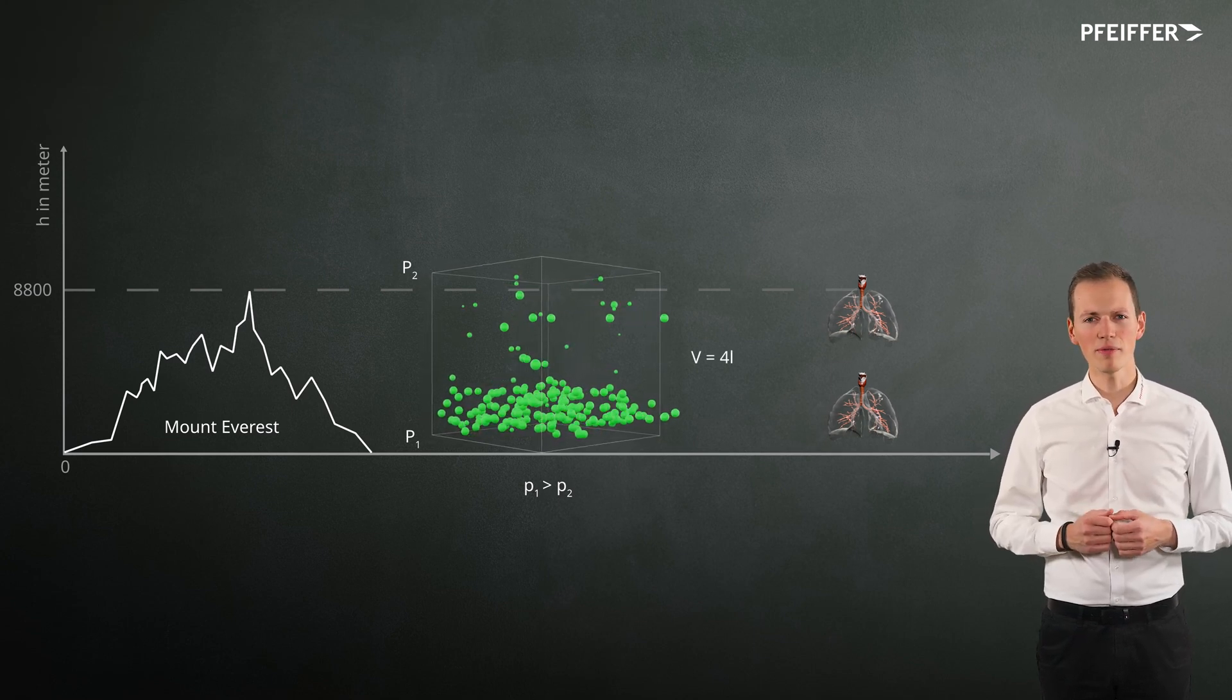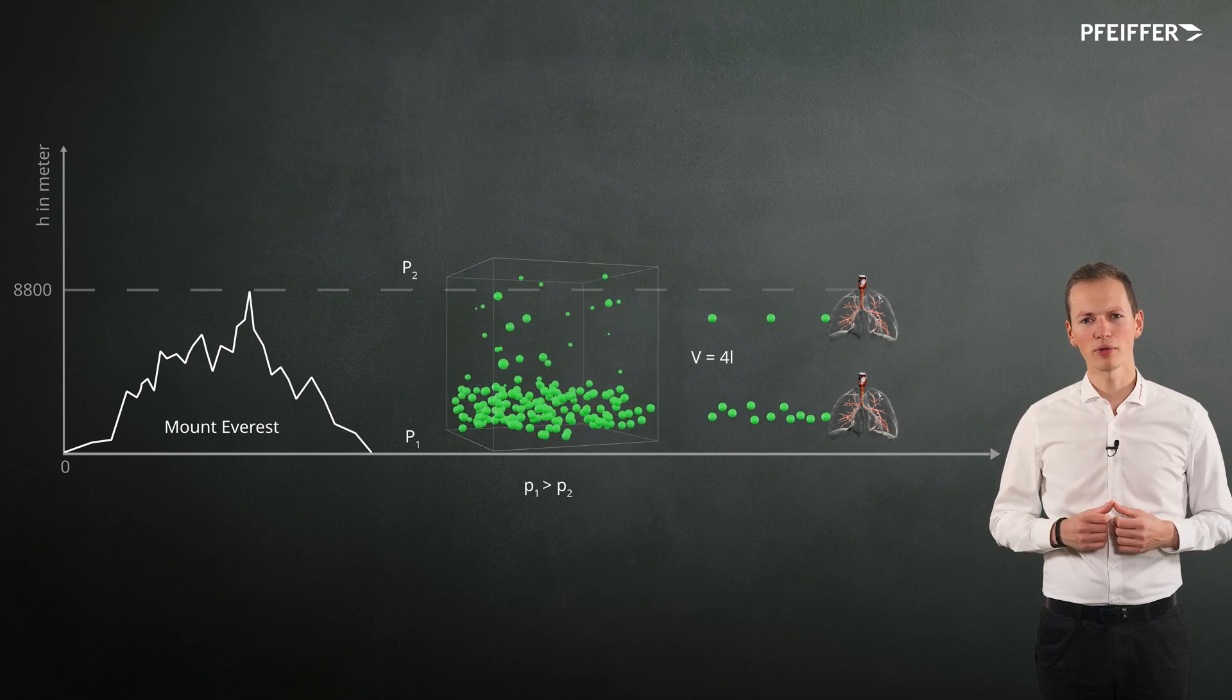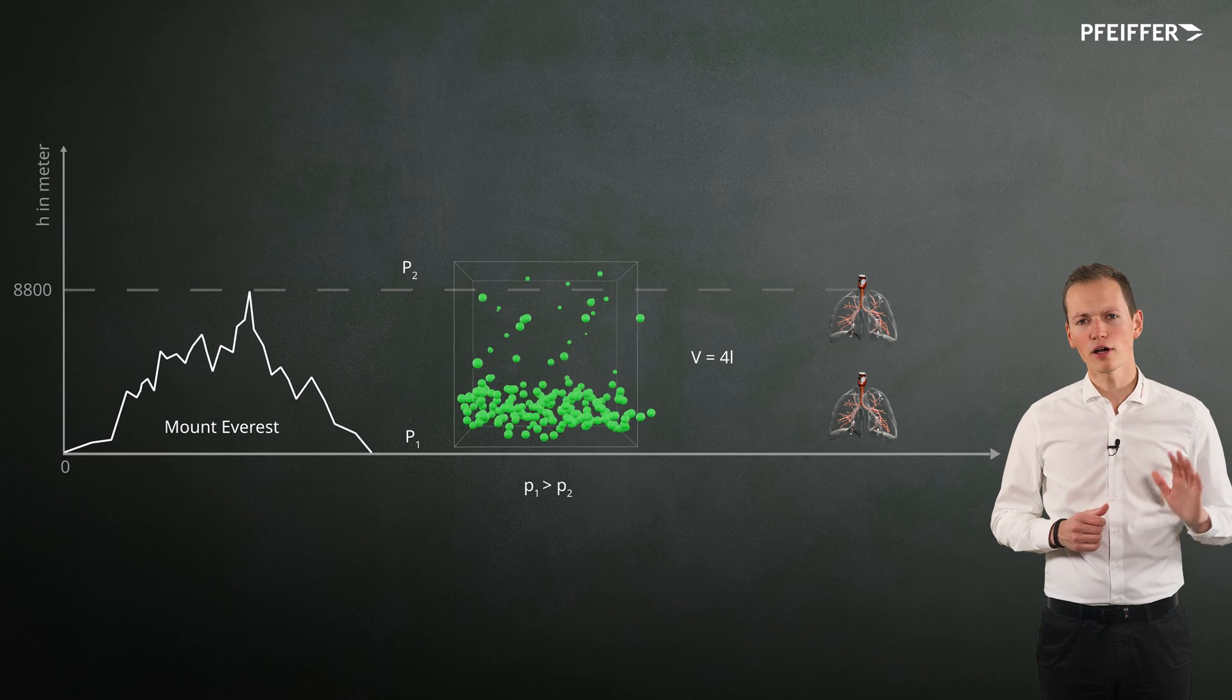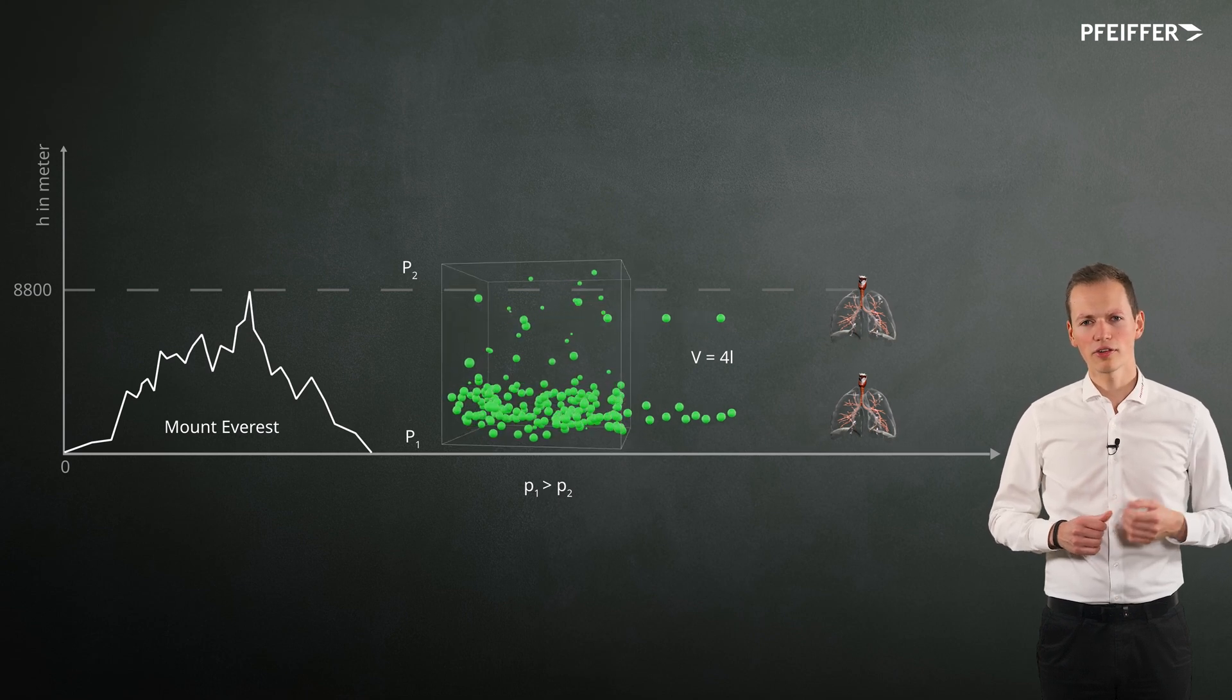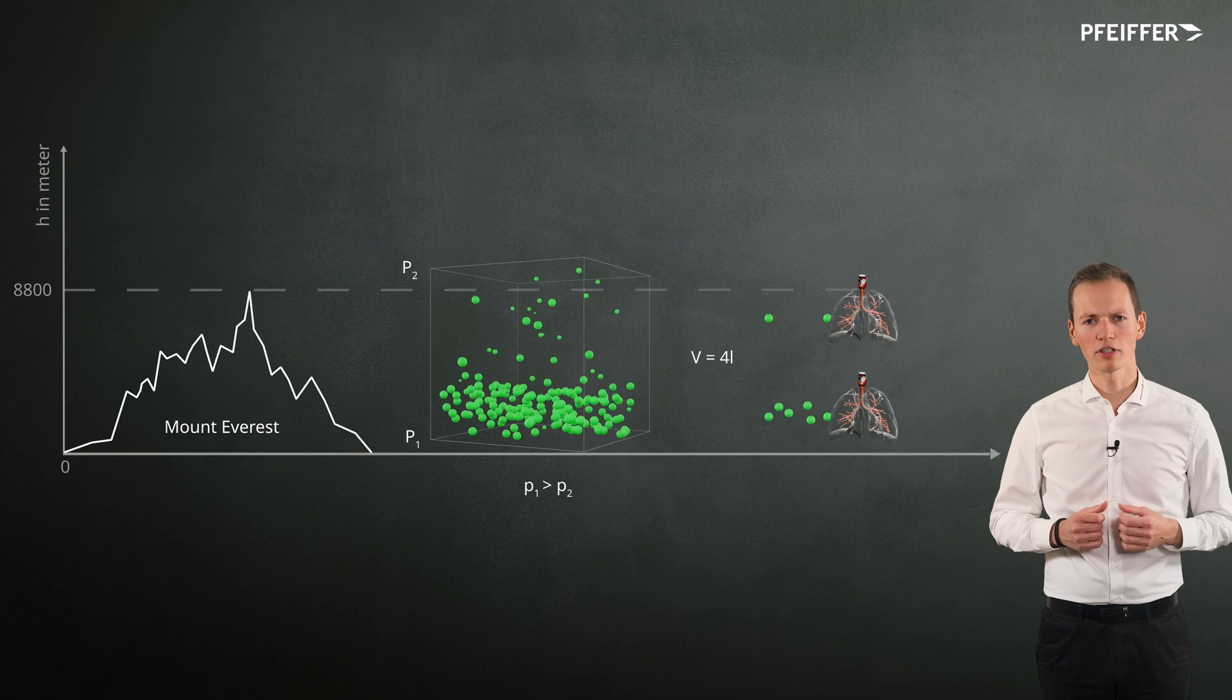The amount of oxygen absorbed by the lungs depends on the pressure and environment. When we are on Mount Everest for example, the pumping speed of the lungs is still 4 liters per second. Due to the lower pressure, less oxygen is being transported into the body.